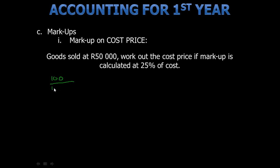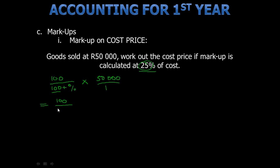The formula is: 100 over (100 plus the percentage of cost), multiplied by the selling price — which in this case is 50,000 Rand — over 1. This is then equal to 100 over (100 plus 25%) multiplied by 50,000.